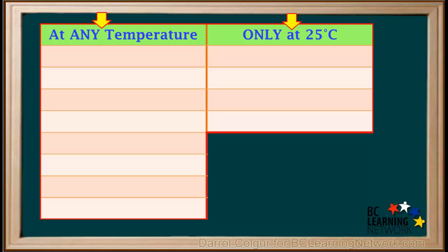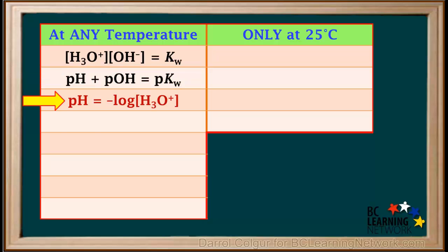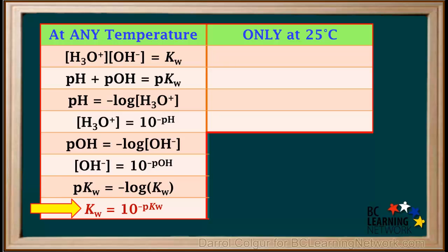Now we'll review the things we know are true at any temperature, and things we know are true only at 25 degrees. Equations true at any temperature: concentration of hydronium times hydroxide equals Kw; pH plus pOH equals pKw; pH equals negative log of [H₃O⁺]; [H₃O⁺] equals 10 to the negative pH; pOH equals negative log of [OH⁻]; [OH⁻] equals 10 to the negative pOH; pKw equals negative log of Kw; and Kw equals 10 to the negative pKw.